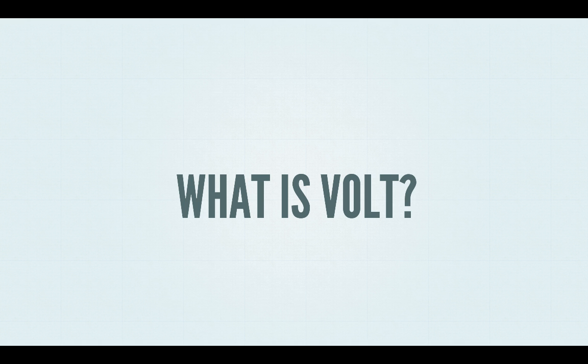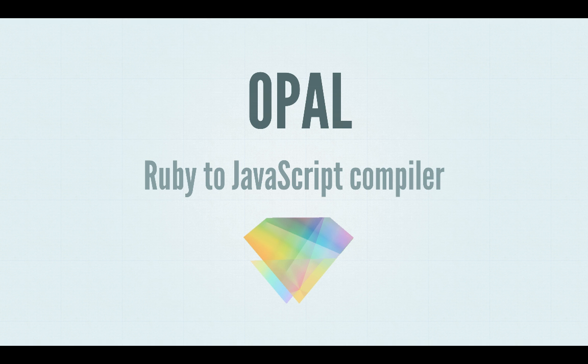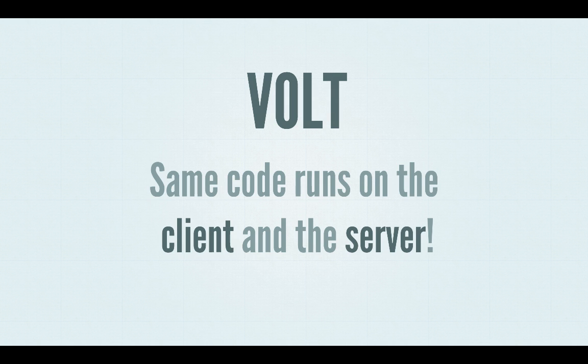Volt is a Ruby web framework that is both a client-side framework and a server-side framework. Your Ruby code is compiled from Ruby to JavaScript on the client using the Opal project, which is a Ruby to JavaScript compiler. This allows us to write the same code and have it run on both the client and the server.